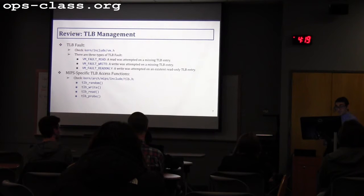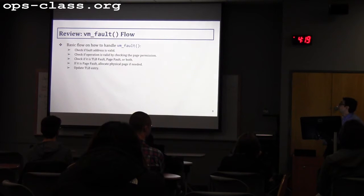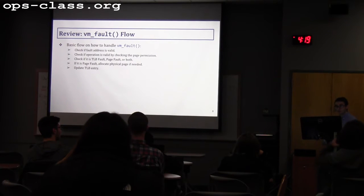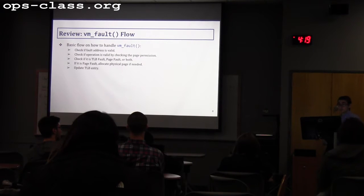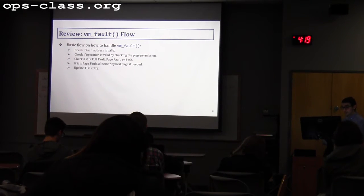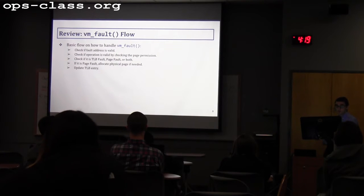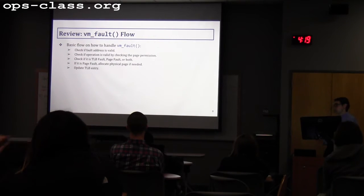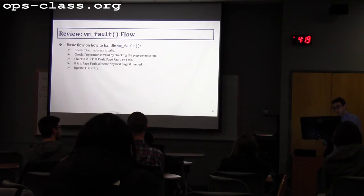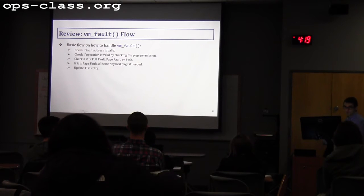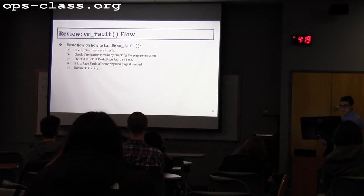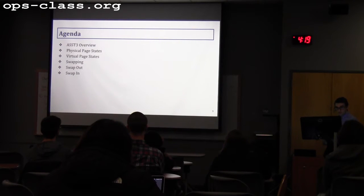Helper functions are defined in tlb.h. The general VM fault handler checks if the fault address is valid and falls within a defined region, then checks if the operation matches the page permission. Then it determines if it's a TLB fault, page fault, or both. If it's a page fault, it allocates a physical page as needed and then updates the TLB entry so the operation can proceed.